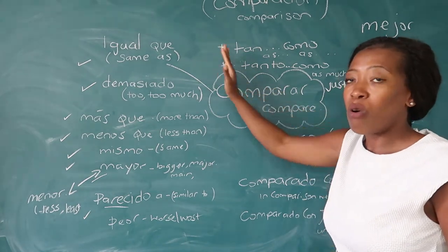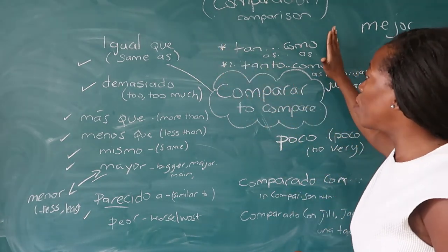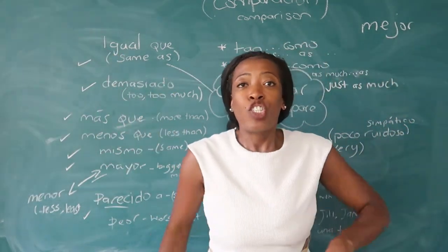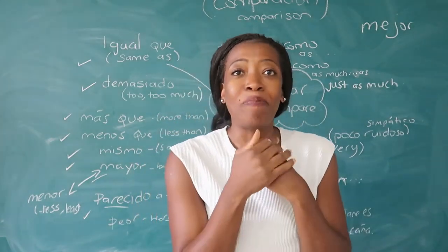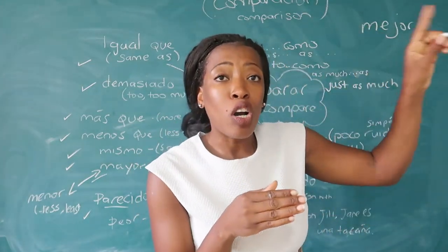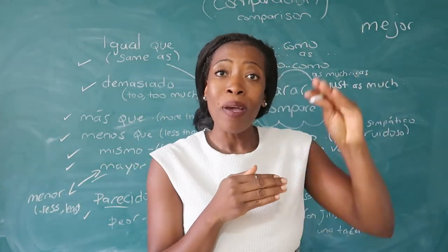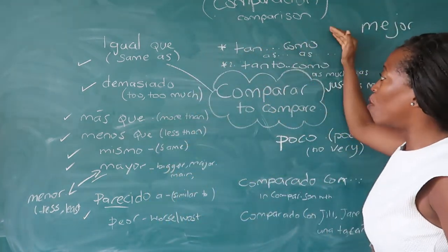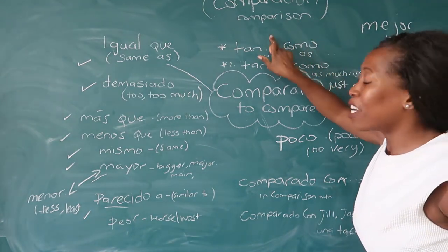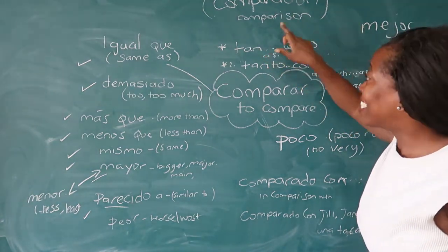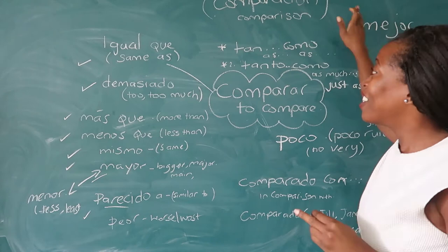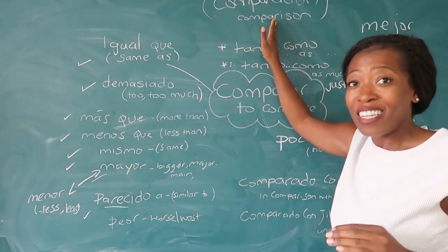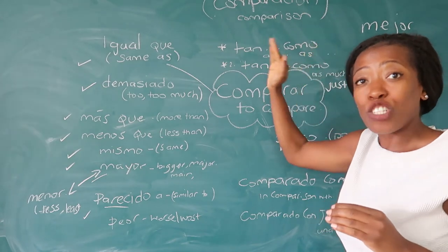These two are also key: tan como, which means 'as.' For example: Tom es tan alto como John — Tom is as tall as John. You can say tan guapo como, tan rico como — just stick the adjective in and you have that comparison: as tall as, as handsome as. It shows the same level.